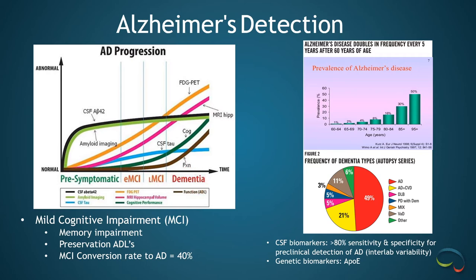The dark green line represents cognitive function — memory impairment and generalized cognitive decline. The brown line represents activities of daily living. The pink line is essentially IcoBrain — volumetric imaging of the hippocampi. Just above that we have the orange line, which is FDG-PET, and the light green line, which represents amyloid PET. Amyloid PET demonstrates a very different curve because it really detects Alzheimer's at that preclinical stage. There are also CSF biomarkers such as CSF amyloid beta-42, which has relatively high sensitivity and specificity for preclinical detection, but still demonstrates a lot of interlab variability. And there are genetic biomarkers such as APOE. Importantly, Alzheimer's disease doubles in frequency every five years after the age of 60, representing a very significant health burden.